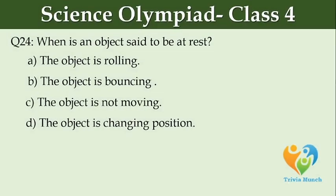When is an object said to be at rest? Option A: The object is rolling. Option B: The object is bouncing. Option C: The object is not moving. Option D: The object is changing position.